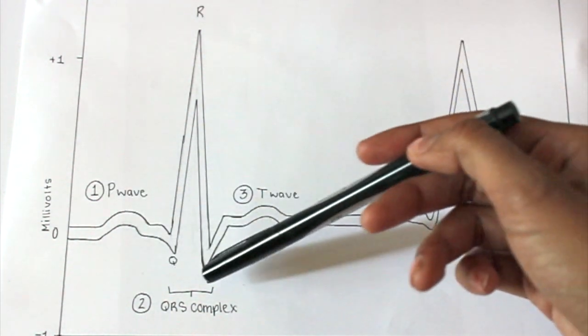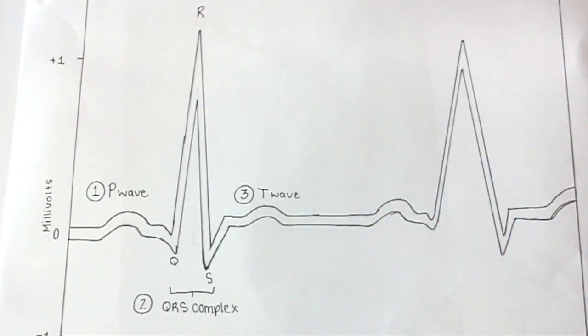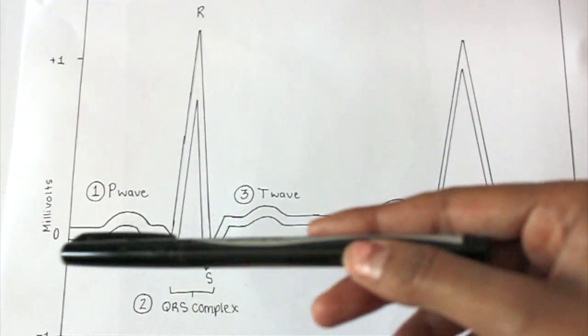Afterwards, we have the QRS complex, which signifies the depolarization of the ventricles, but also the repolarization of the atria.